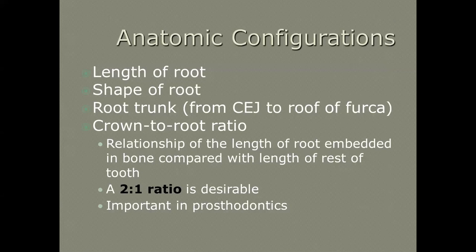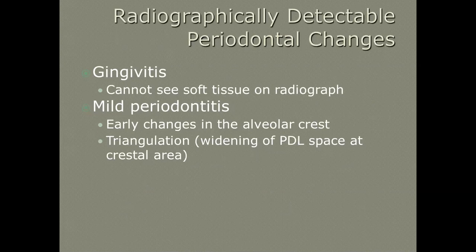Anatomic considerations: what is the length of the root, the shape of the root, how long is that root trunk, and what is that crown-to-root ratio? The crown-to-root ratio is the relationship of the length of the root and how much is embedded in the bone. We want about a two-to-one ratio — we want more root than crown embedded in the bone to hold the tooth in.